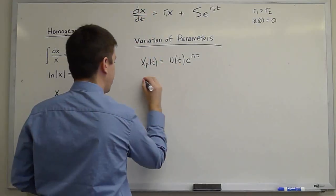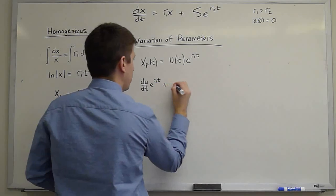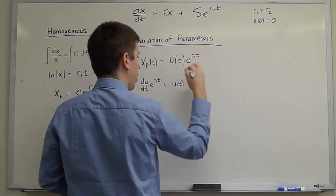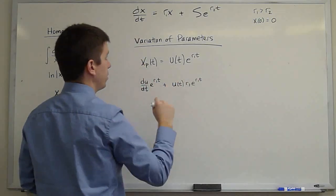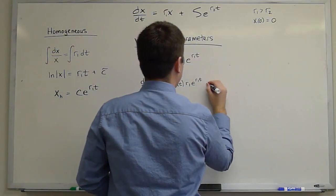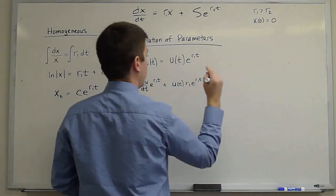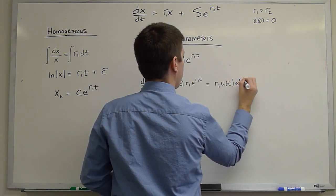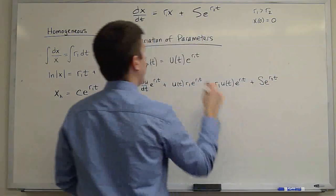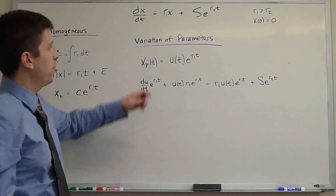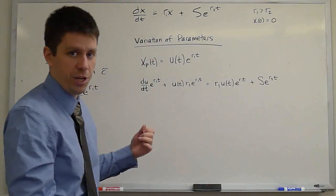So let's insert this guess into the ODE. When we take the derivative of this product, we get du/dt*e^(r1*t) + u(t)*r1*e^(r1*t). That is the derivative of this product. Equals r1*e^(r1*t) times u(t)*e^(r1*t) plus s*e^(r2*t). In my explanation, I took that out of standard form. I have this term on the right-hand side, which is why these two terms show up on opposite sides of the equals sign. If I had left it in standard form, we would have had this minus that on the left-hand side.